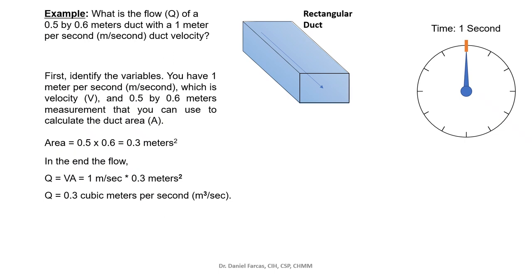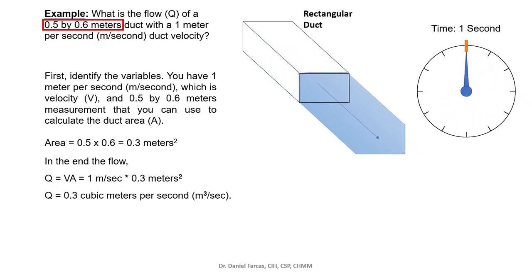For this next example, we have to calculate the flow of a 0.5 by 0.6 meters rectangular duct with a 1 meter per second duct velocity. First, let's identify the variables: 1 meter per second is velocity, and 0.5 by 0.6 are the measurements of the duct sides. It's easy and fast to calculate the area: 0.5 times 0.6 equals 0.3 square meters. Then we multiply the result with 1 meter per second to find the flow value, which is 0.3 cubic meters per second.